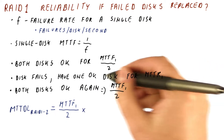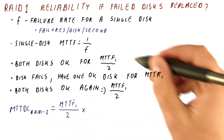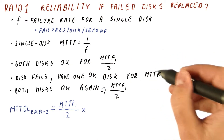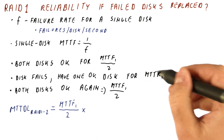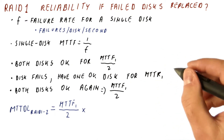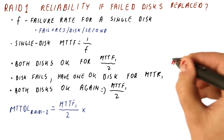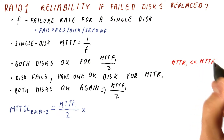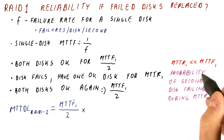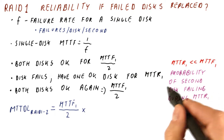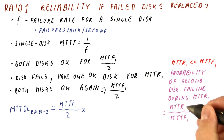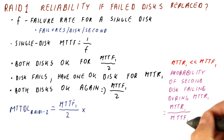Normally, to calculate this probability, we would have to compute the full distribution and see what is the probability of it being under MTTR and so on. But when the time to repair is much smaller than the time to failure of a single disk, we can approximate the probability of the second disk failing during the MTTR for the first disk simply as MTTR divided by MTTF.